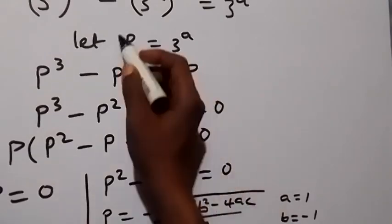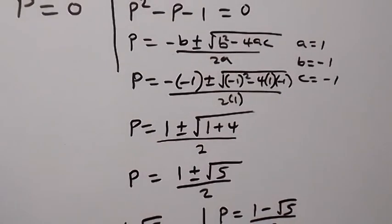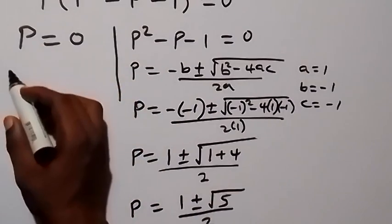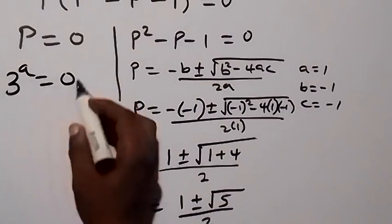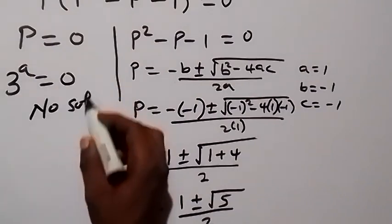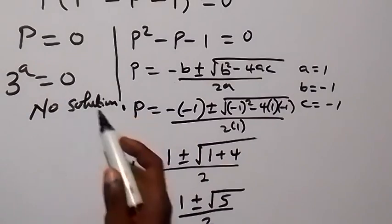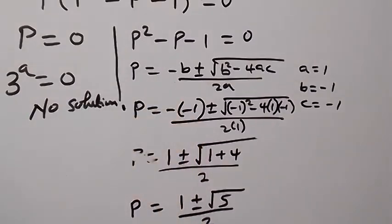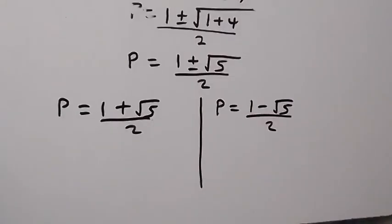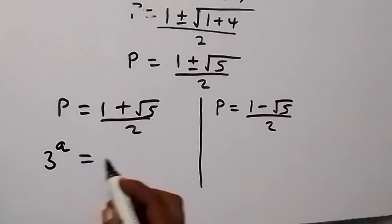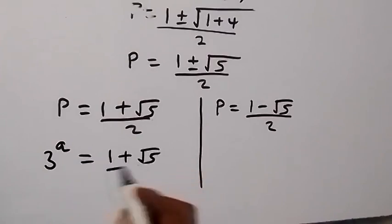We should recall that we defined p as 3 raised to power a. For the first case, p equals 0, so 3 raised to power a equals 0 — there is no solution here, because 3 raised to any power must be greater than 0. For the second case, p equals 1 plus root 5 over 2, so 3 raised to power a equals 1 plus root 5 over 2.